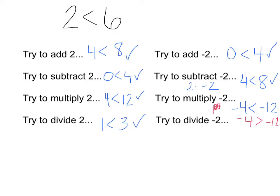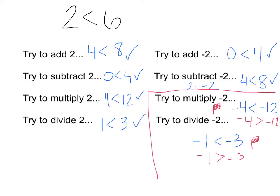Dividing by negative 2: 2 divided by negative 2 is negative 1, 6 divided by negative 2 is negative 3. Is negative 1 less than negative 3? No, it's not — negative 1 is greater than negative 3. So again, red flag. When you add, subtract, multiply, or divide by a positive, no big deal. When you add and subtract negatives, no big deal. But when you are multiplying or dividing by a negative number, you have to flip the sign. When you multiply or divide by a negative — flip the sign. Those are the only times you have to do anything different.